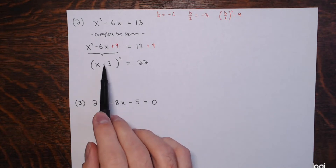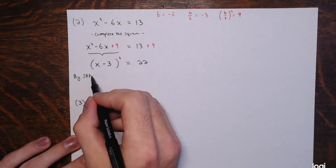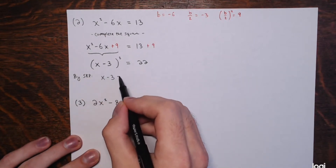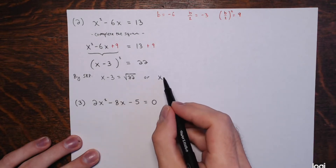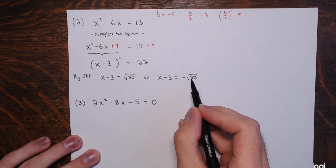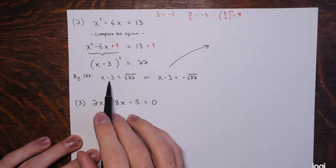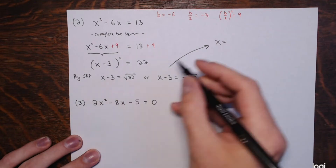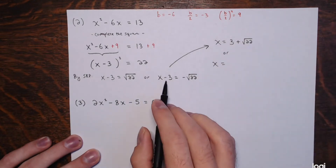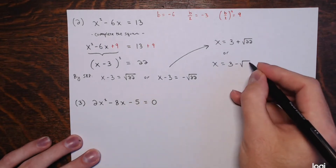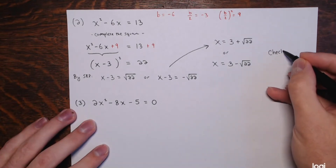The left side x² - 6x + 9 is a perfect square trinomial, expressible as (x - 3)². You can verify: (x-3)(x-3) = x² - 6x + 9. So (x - 3)² = 22. Applying the SRP: x - 3 = ±√22. Adding 3 to both sides: x = 3 + √22 or x = 3 - √22, which can also be written as x = 3 ± √22.